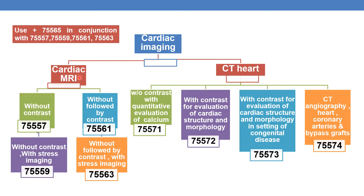First, coming to cardiac MRI, which is magnetic resonance imaging. Cardiac imaging done via MRI without contrast with stress imaging uses code 75559. Cardiac imaging via MRI without contrast followed by contrast uses code 75561. When cardiac imaging is done via cardiac MRI without contrast followed by contrast with stress imaging, the code is 75563.